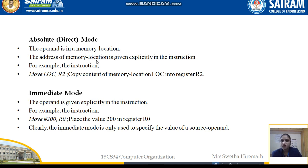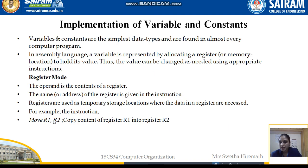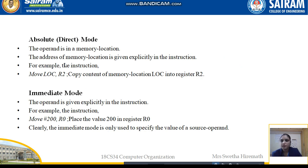Next is Absolute or Direct Mode. Here the operand is in a memory location, and the address of that memory location is given explicitly in the instruction. For example, Move Loc comma R2 — Loc specifies the memory location, and whatever contents are placed in Loc will be moved to R2, copying the contents of memory location Loc into register R2. This is called Direct or Absolute Mode, as we use both a memory location and a register. The Immediate Mode will be covered in the next video.